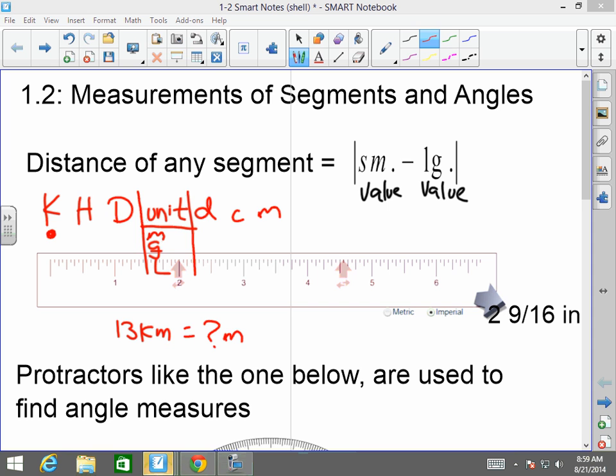So, if I'm at 13 kilometers, and I need to know how many meters, first thing I want you to notice, there's an M here and an M here. All of these letters here, my friends, are prefixes. Kilo, hecto, deca. Deci, centi, milli. The M by itself is just a meter.